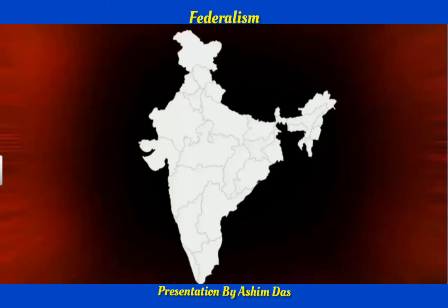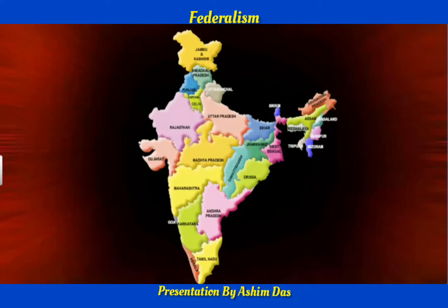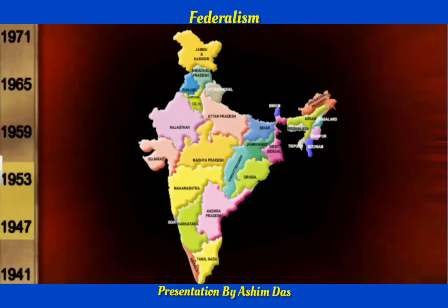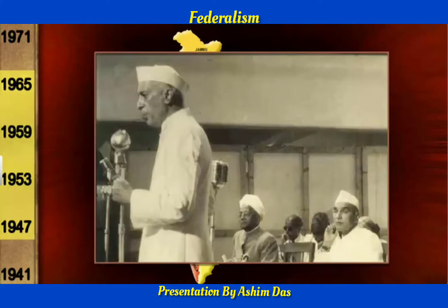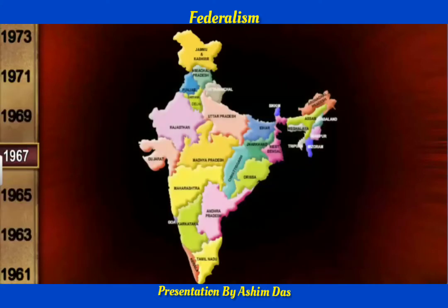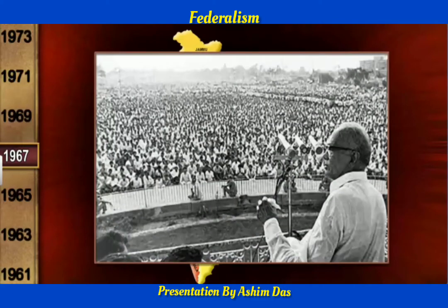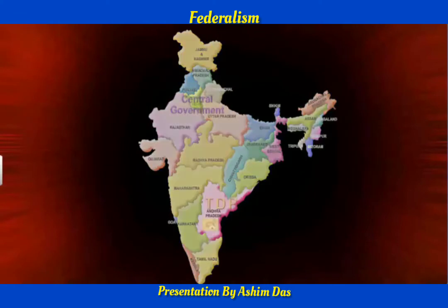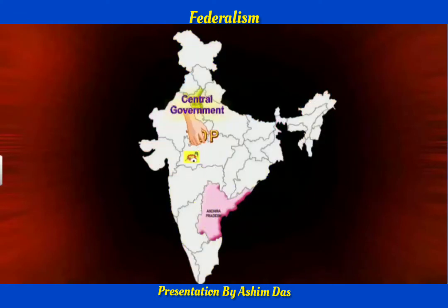Restructuring and division of powers between the center and states is another factor that contributed to the success of federalism in India. At the time of independence, the central government and the state governments were ruled by the same political party, namely the Congress. After 1967, when opposition parties came to power in different states, relations between the center and states began to change. The central government often misused powers and dismissed state governments led by rival parties, which was against the spirit of federalism.